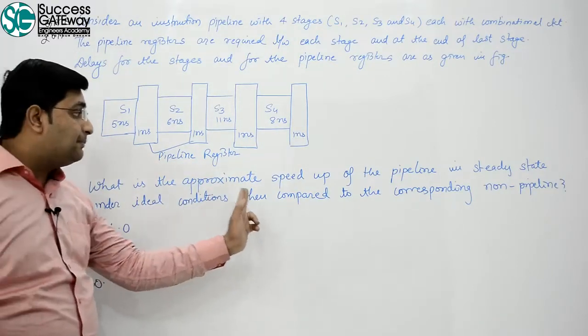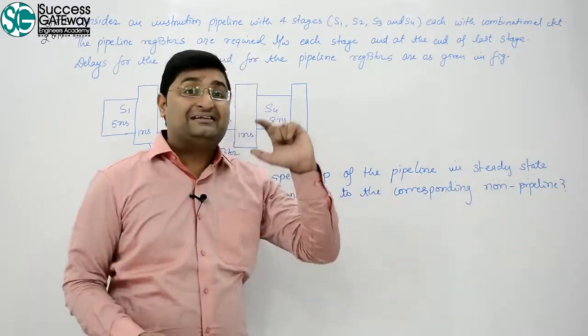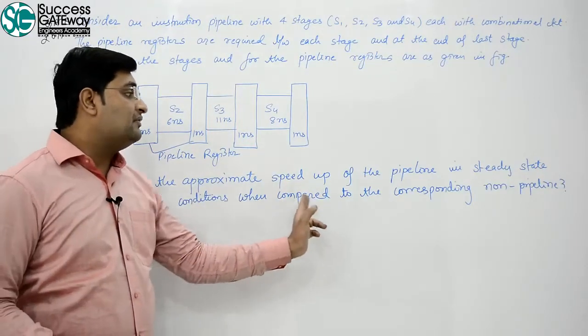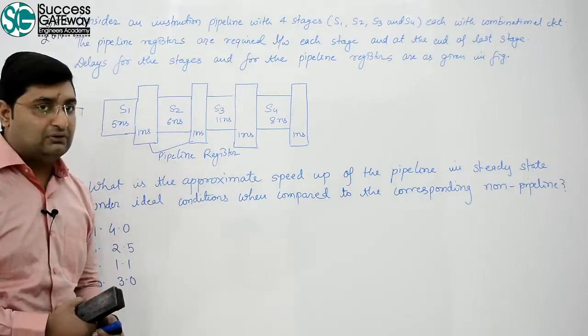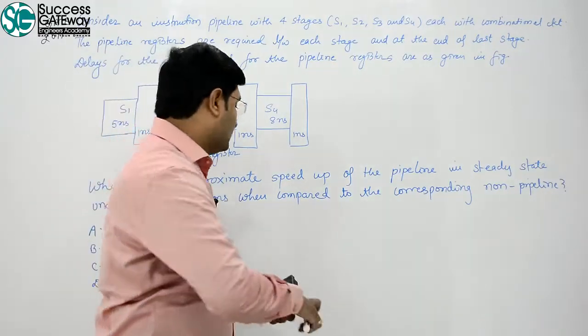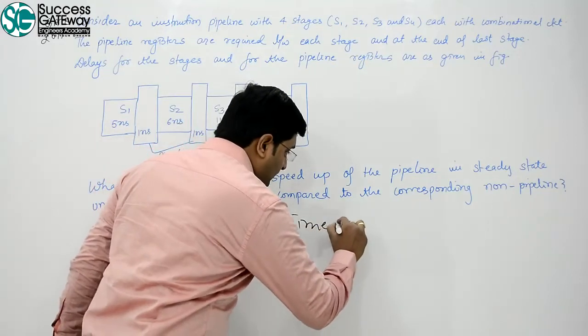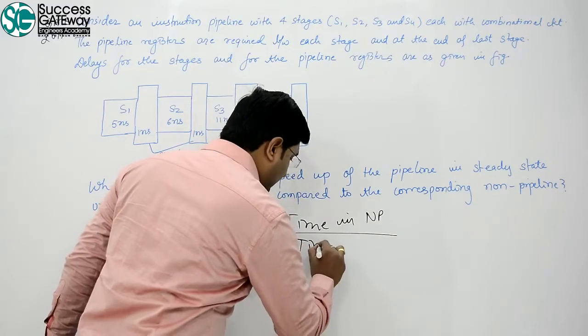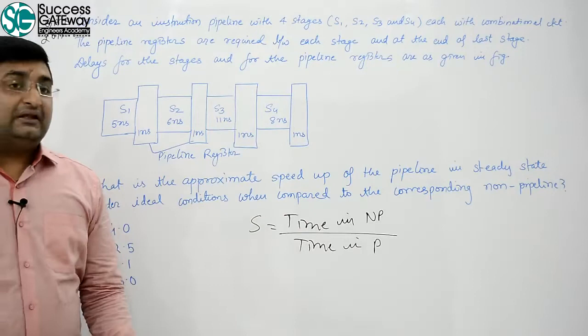What is the approximate speed up of the pipeline in steady state under ideal condition when compared to the corresponding non-pipeline? Pay attention. S is time in non-pipeline upon time in pipeline.